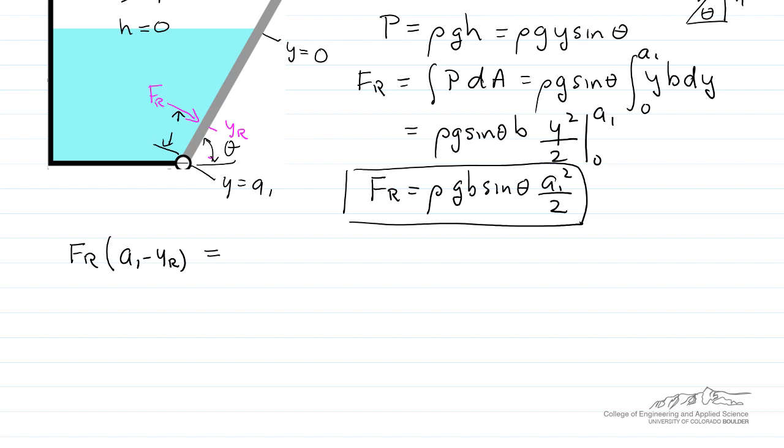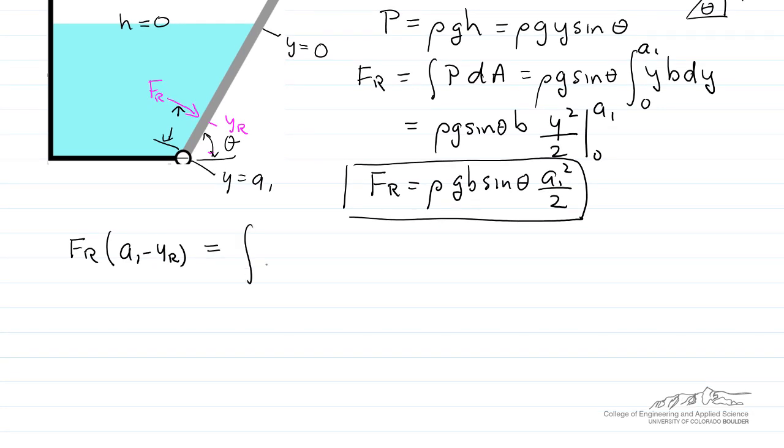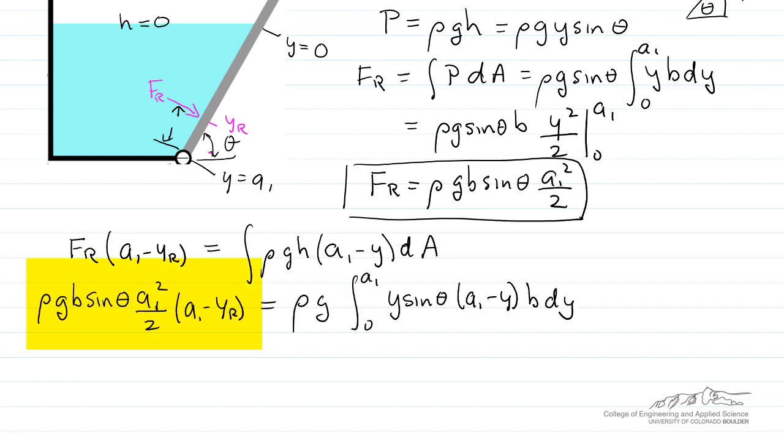This equals the integrated value of ρgh times the moment arm a1 minus y for any value of y, integrated over the area. Substituting values: on the left side, I substitute the Fr we just calculated. On the right side, ρ and g are constants, h is y sin(θ), and dA is b dy.